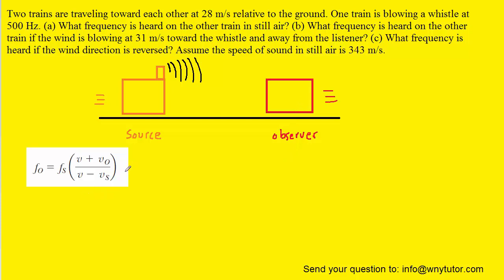Now we know that when two objects are moving relative to each other, the Doppler effect is going to be at play. And we know the Doppler effect obeys the following equation.